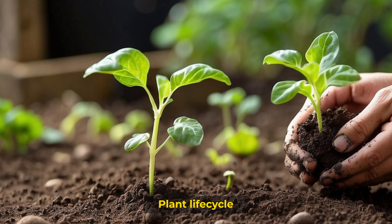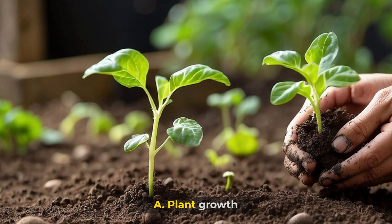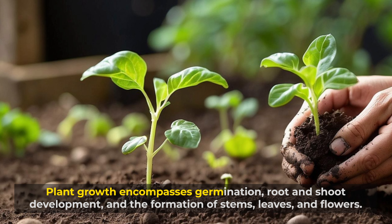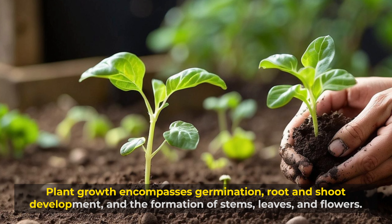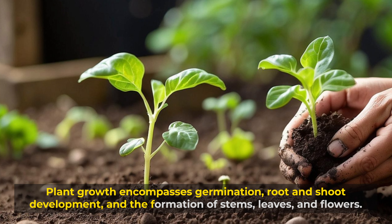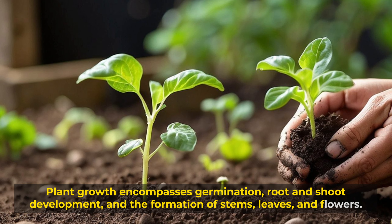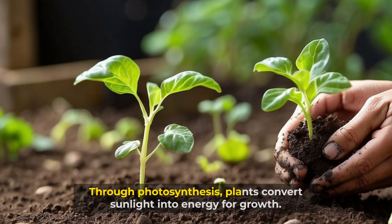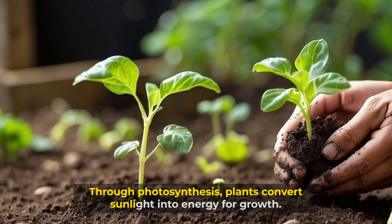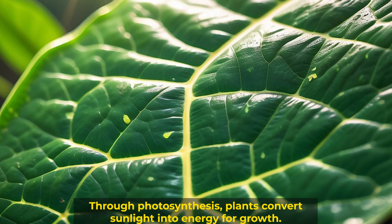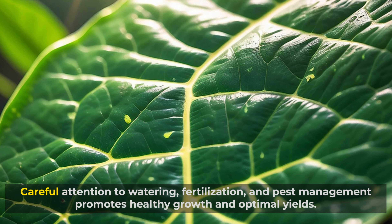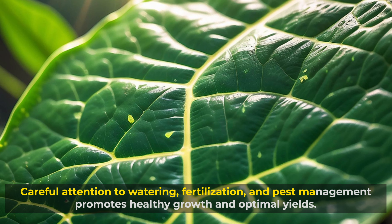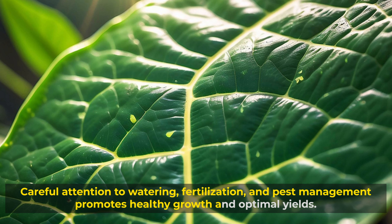Plant lifecycle and plant growth encompasses germination, root and shoot development, and the formation of stems, leaves, and flowers. Through photosynthesis, plants convert sunlight into energy for growth. Careful attention to watering, fertilization, and pest management promotes healthy growth and optimal yields.